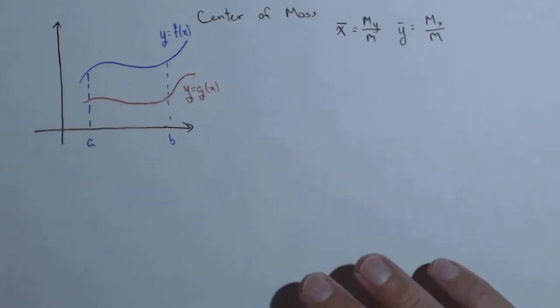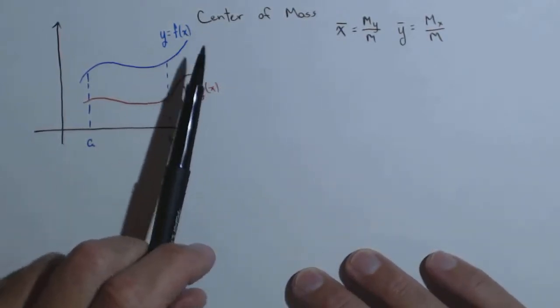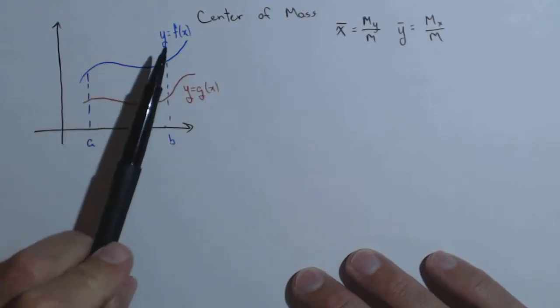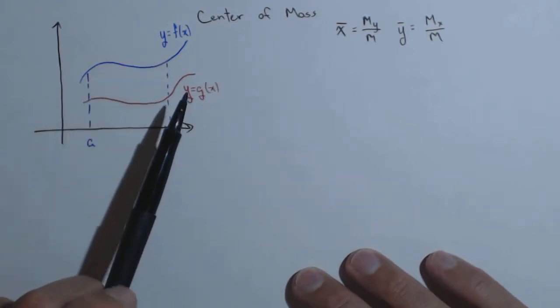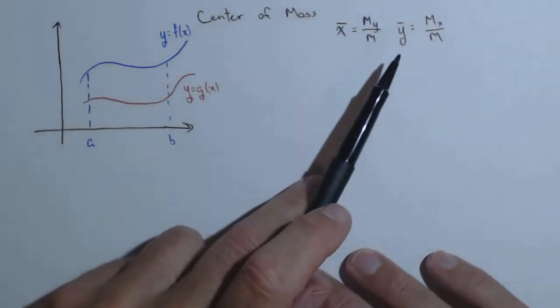In this video, we're going to talk about finding equations for the center of mass between two curves, y equals f of x and y equals g of x, and locating x bar and y bar.